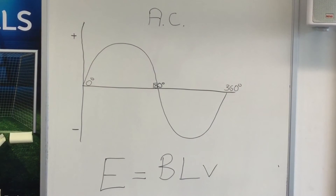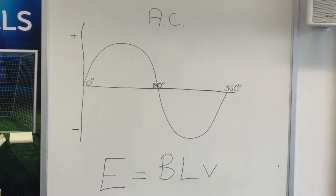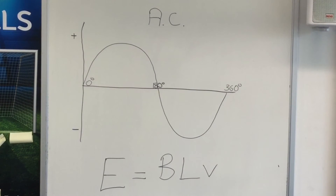So we can see from the first part of this presentation where we passed a conductor through a magnetic field and watched the deflection back and forth on our galvanometer, we proved the principles of alternating current — in other words that our current will go in one direction on the period where it goes up from 0 degrees through to 180, and then falls from 180 through to 360 in the opposite direction.